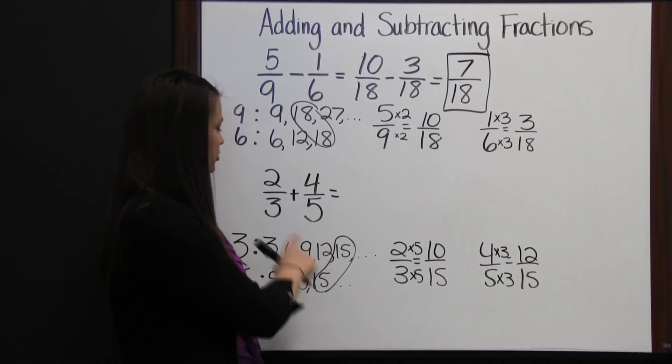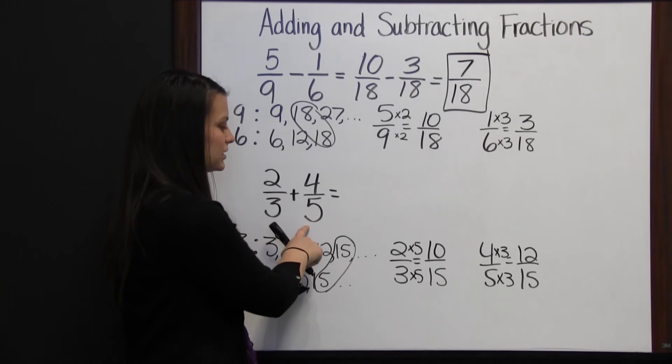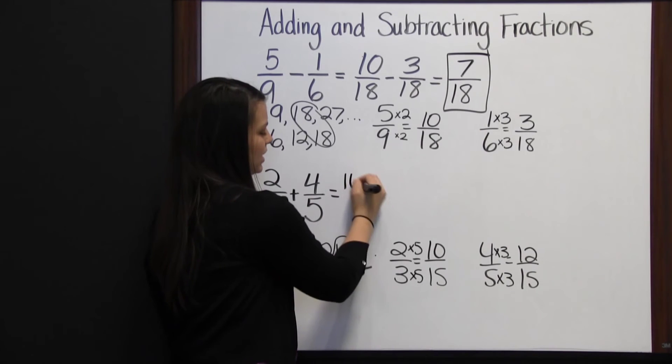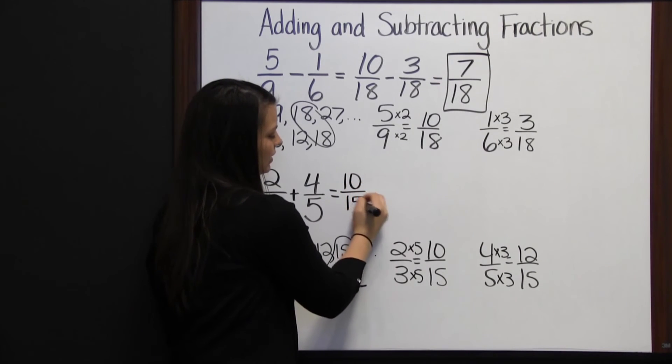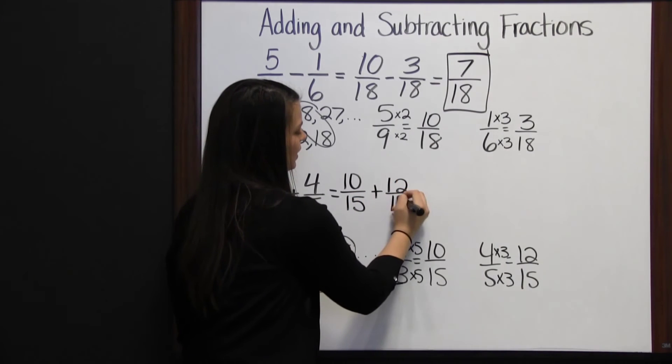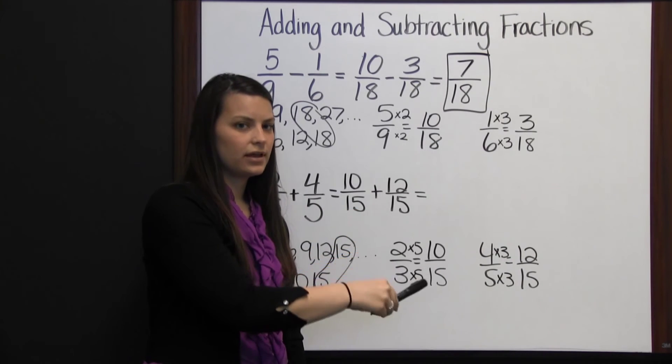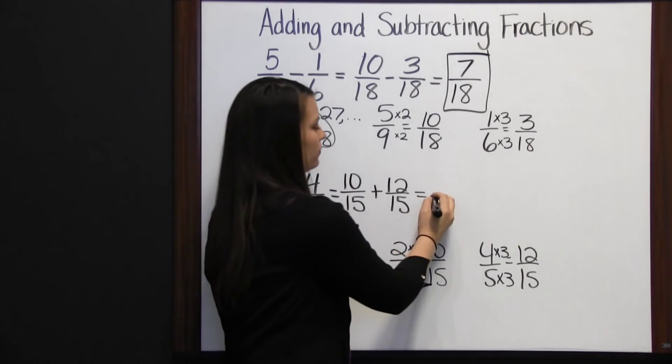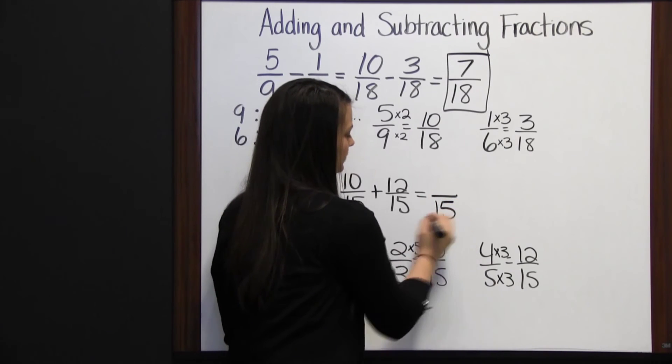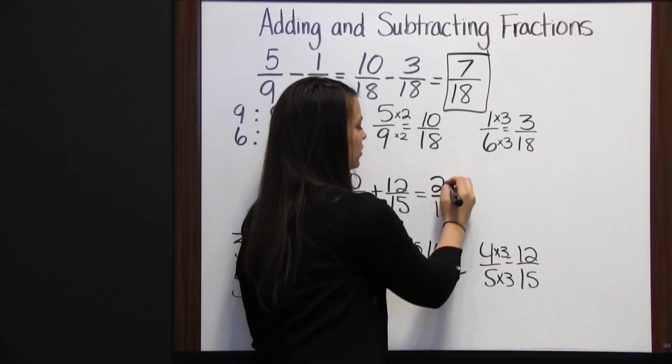Which means that two-thirds plus four-fifths is the same as ten-fifteenths plus twelve-fifteenths. And again, we add the numerators and put that result over our denominator. Ten plus twelve is twenty-two.